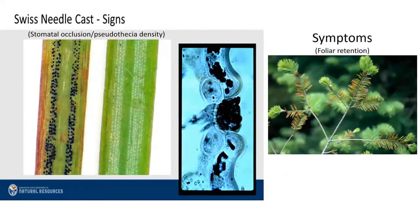The fungus is an endophyte, meaning it lives inside the needles of Douglas fir — and only Douglas fir. Needle function is really only impacted when the fungus produces fruiting bodies that emerge into the stomates, blocking gas exchange and starving the tree of necessary carbon. The picture in the middle is a cross section of an infected needle showing the fruiting body plugging a stomate. When too many stomates on the needle get plugged, the needle dies and is cast or dropped from the branch.